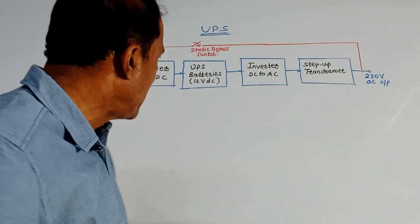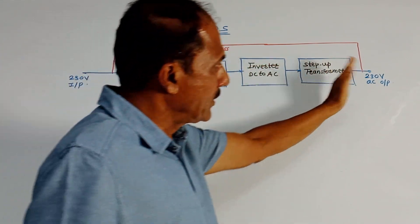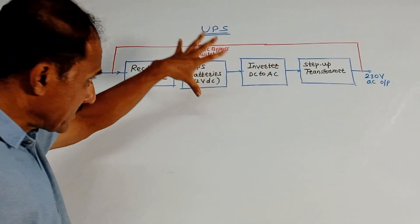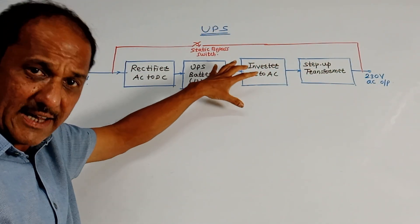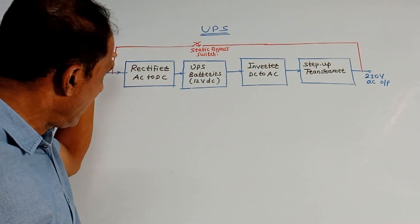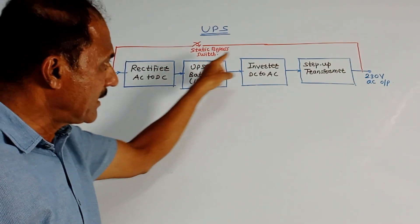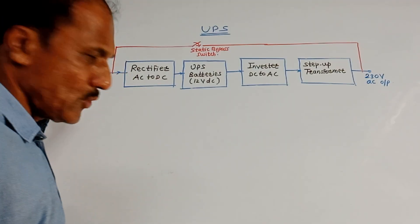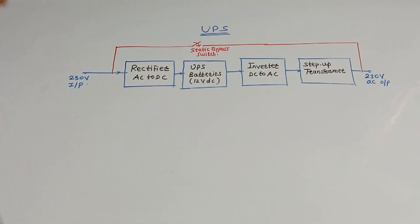Whenever AC mains fails, due to this block diagram you are again getting 230 volt AC at the output side. If for some reason this UPS fails, then one static bypass switch is connected — so you can bypass all these blocks and the appliance is directly connected to the 230 volt input. This is about the block diagram of UPS.